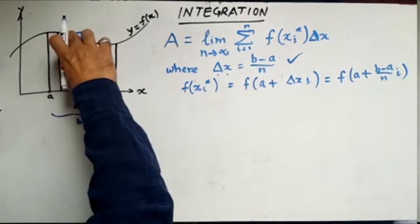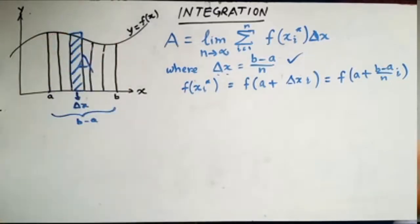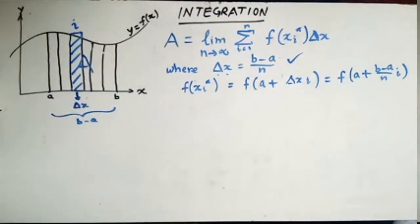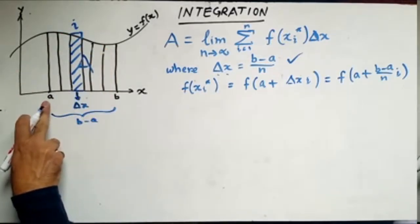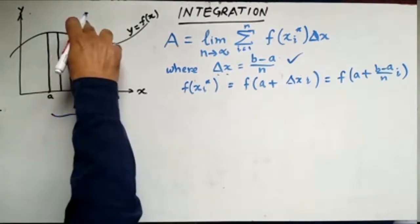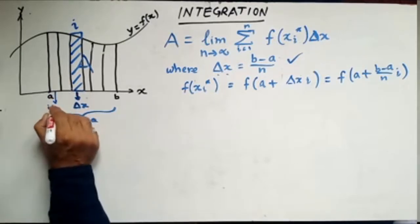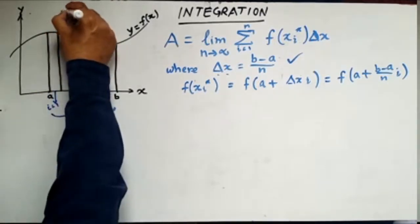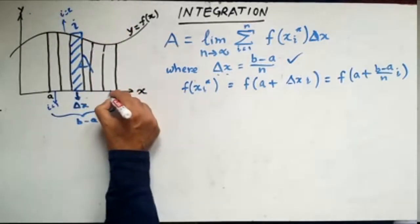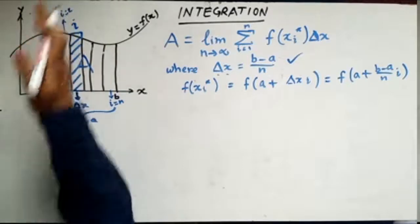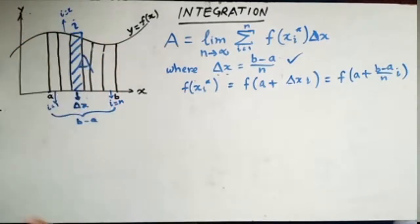We have to get the value of this part in order to find out the area of one particular rectangle. If this is the ith interval, i will be changing from 1 to n. So the first interval has i equal to 1, the next has i equal to 2, and so on until the last part where i equals n. For any ith interval, it will be the ith position.